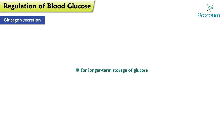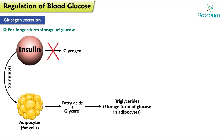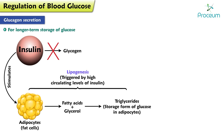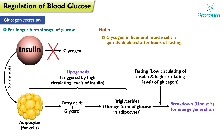For longer-term storage of glucose, adipocytes or fat cells are used. Instead of forming glycogen, insulin stimulates adipocytes to form fatty acids. Fatty acids are combined with glycerol to create triglycerides, which are the storage form of glucose in adipocytes. This process is called lipogenesis, and it is triggered by high circulating levels of insulin. Conversely, the breakdown of these triglycerides — termed lipolysis for energy generation — occurs in response to both low circulating levels of insulin and high circulating levels of glucagon, such as in states of fasting. While the glycogen in liver and muscle cells is quickly depleted after hours of fasting, adipocytes can sustain glucose levels for days or even months.